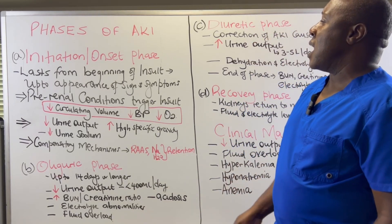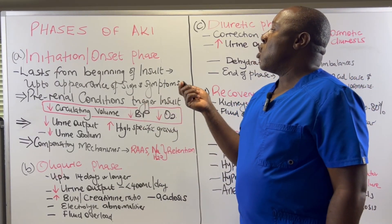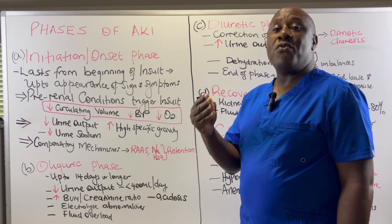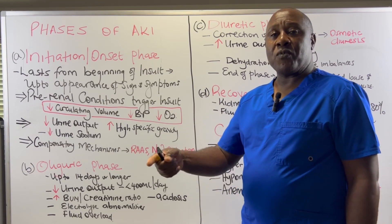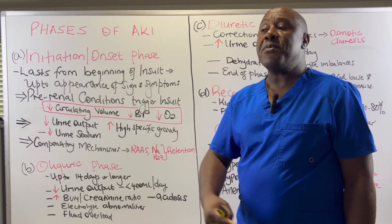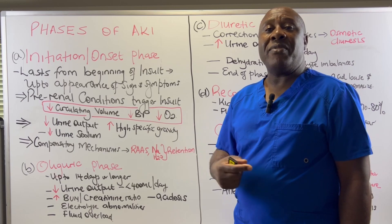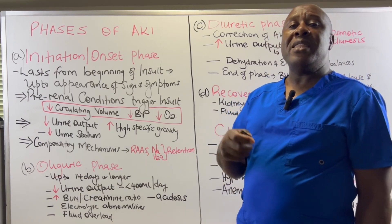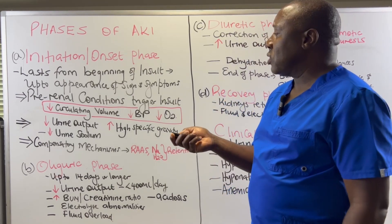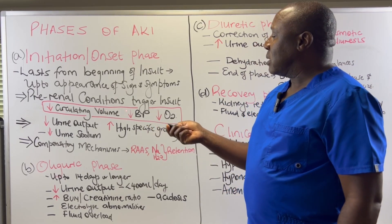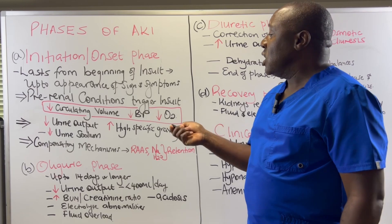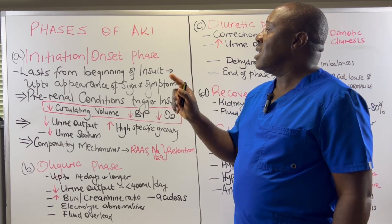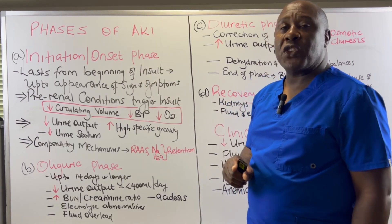Let us look at the phases of AKI. First, we have the initiation or onset phase. This is the phase that lasts from the beginning of the insult to the appearance of the signs and symptoms. There is a time that lapses from the insult to when signs and symptoms appear, and that constitutes the initiation or onset phase. This phase is normally triggered by pre-renal conditions like decreased circulating volume, decreased blood pressure, and even decreased oxygenation.